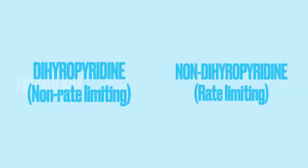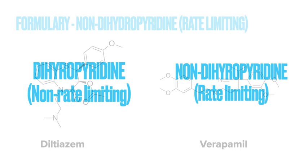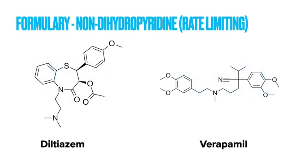Looking at formulary, there are two main classes of calcium channel blocker: the dihydropyridines and the non-dihydropyridines. These are also known as the non-rate limiting and rate limiting calcium channel blockers respectively. I'm going to use 'dihydropyridine' as that's generally the name most people use in the literature. Now let's start with the non-dihydropyridines — this is a much smaller list, and there are two drugs in this category: diltiazem and verapamil.